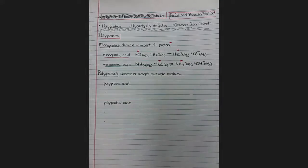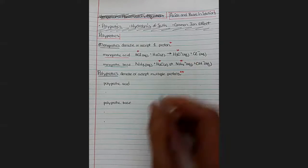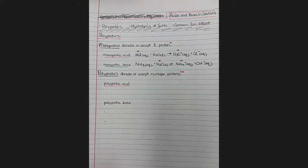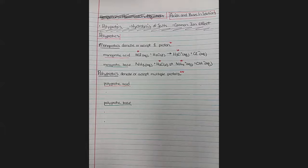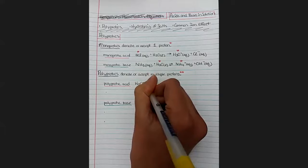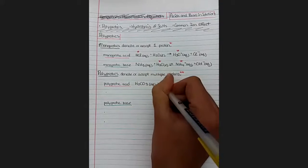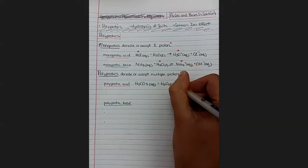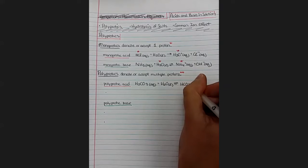So if it's an acid, it can donate multiple protons. And if it's a base, you can accept multiple protons. We'll get an example of a polyprotic acid and a polyprotic base. So an example of a polyprotic acid is carbonic acid, which is H2CO3. That can hydrolyze in water to release more than one proton.